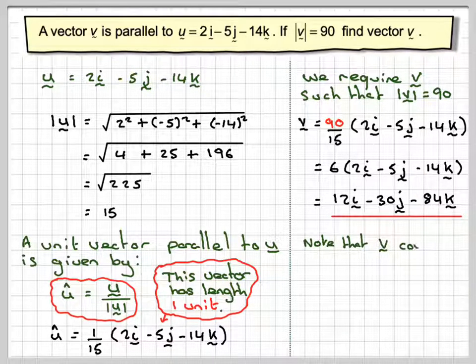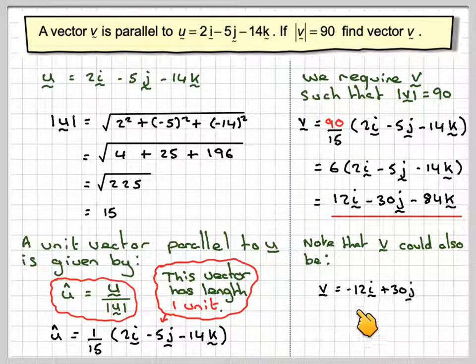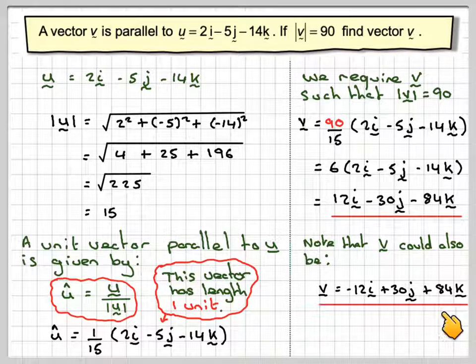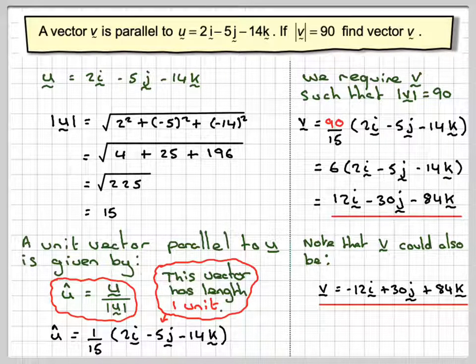But you should also note, V could also be minus 12i plus 30j plus 84k, because all we're required to do is have a vector which is parallel to it.